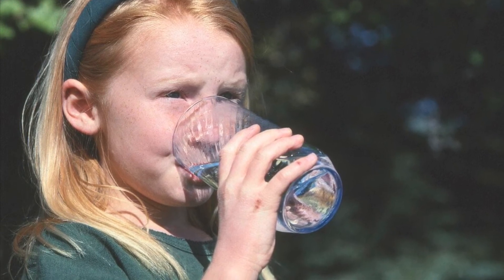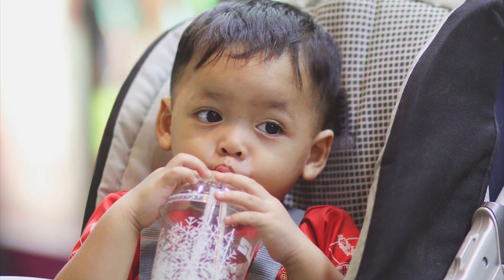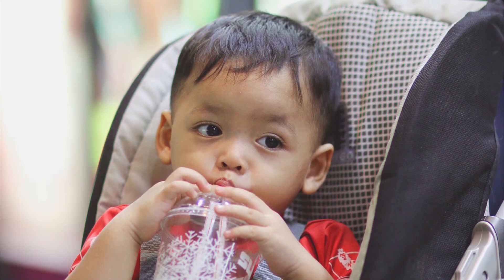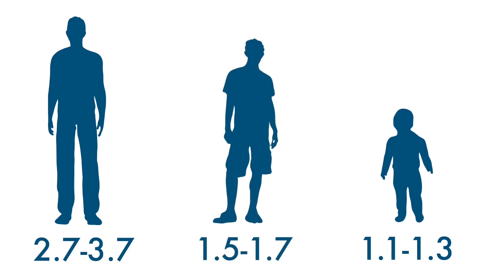The daily need of water for a child depends on age, weight, sex, level of activity or exercise, environment, overall health, etc. So, in normal conditions, boys and girls aged 4 to 8 years need 1.1 to 1.3 litres and above this need 1.5 to 1.7 litres per day.